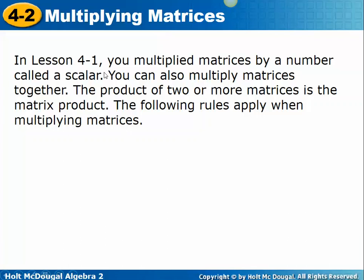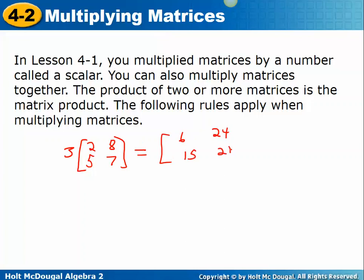You already multiplied by a scalar — that's different. That's when you have a number in front of the matrix, remember from section 4.1, and then you multiplied every entry by that number. So multiplying by a scalar would result in the matrix 6, 24, 15, 21 — for example, 3 times 5 is 15 and 3 times 7 is 21.